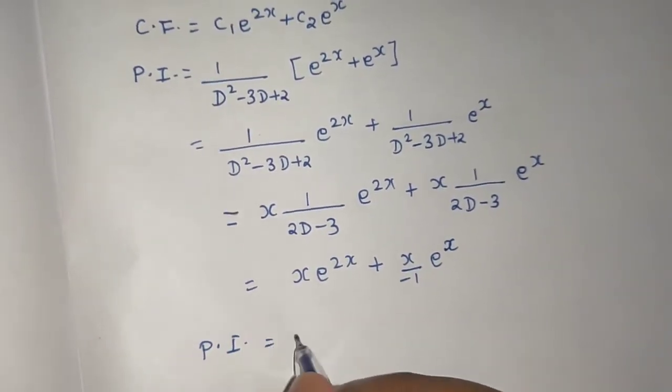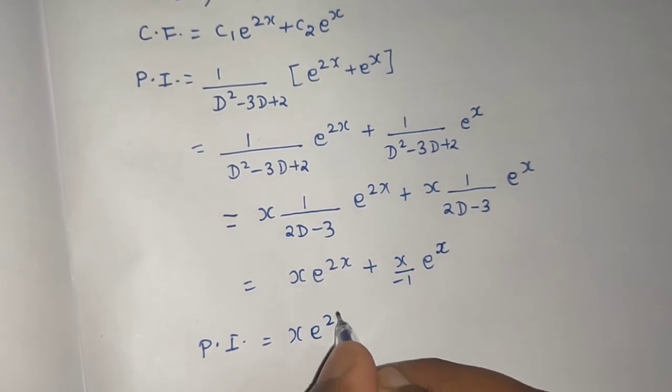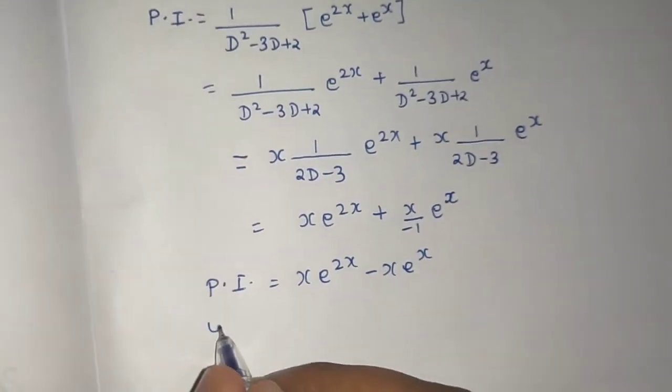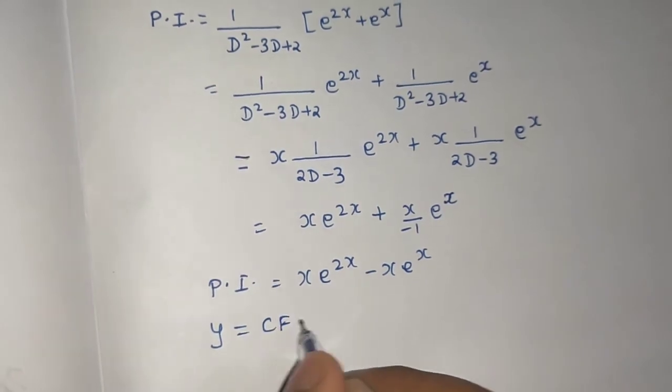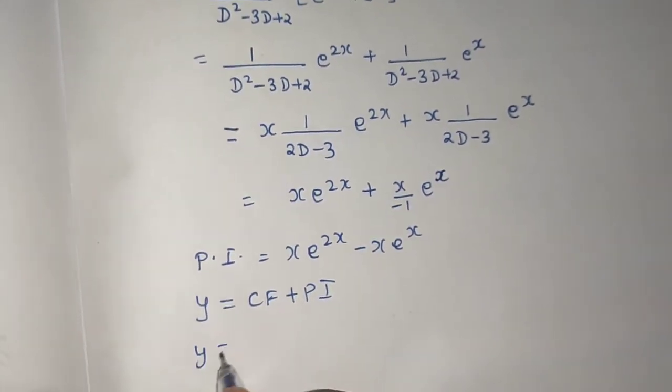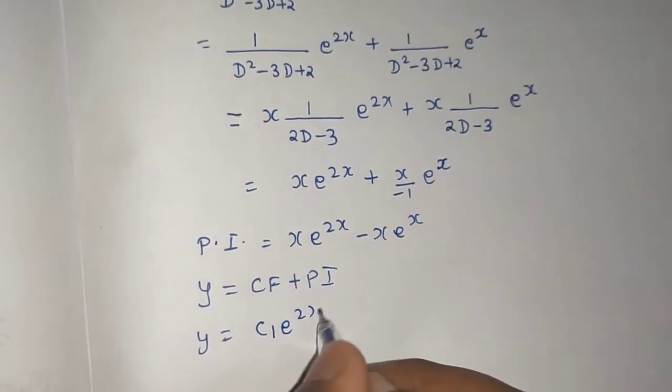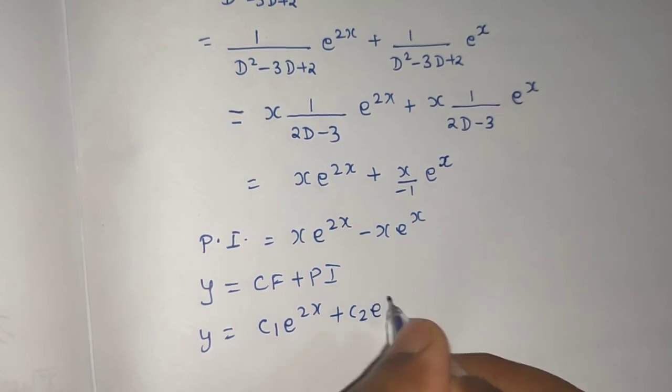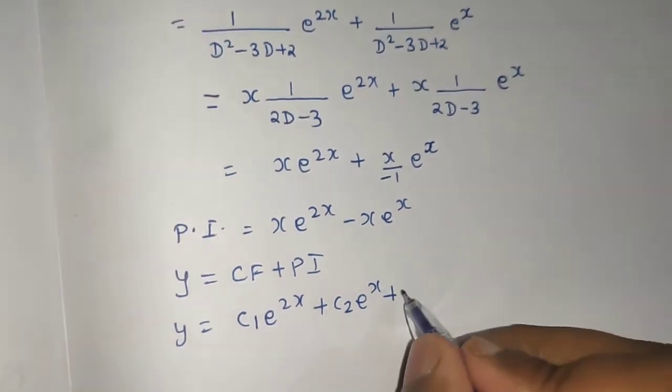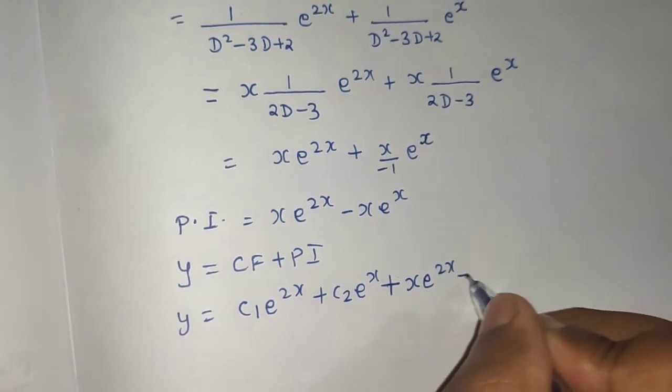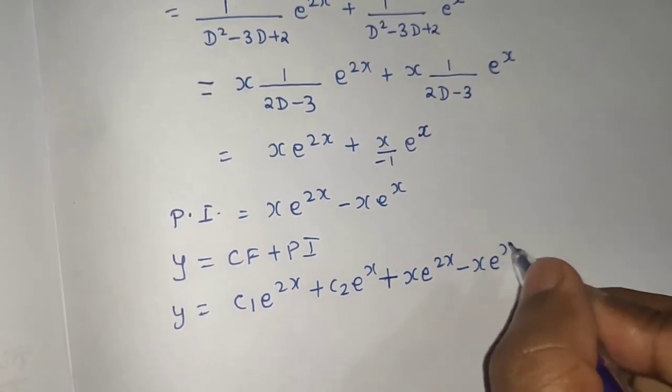Finally, I can write the particular integral as xe^(2x) minus xe^x. And my final solution as CF plus PI: y = C₁e^(2x) plus C₂e^x plus xe^(2x) minus xe^x.